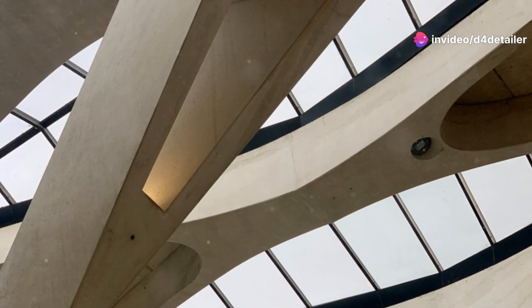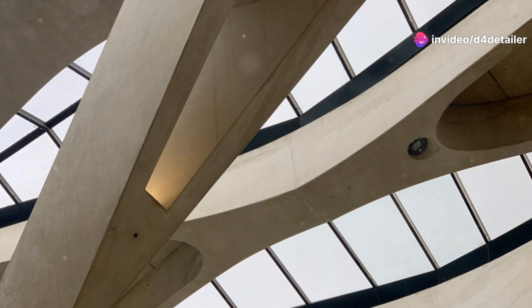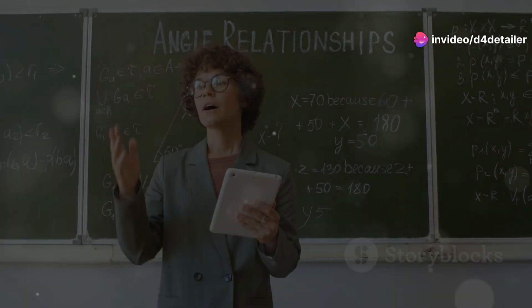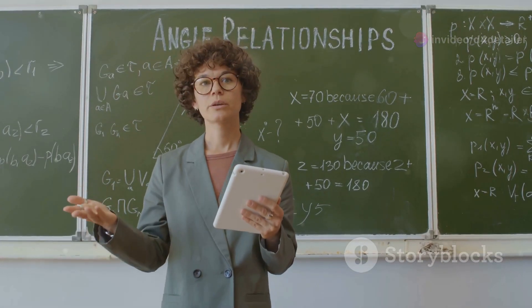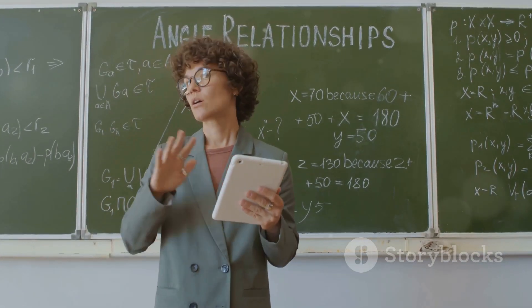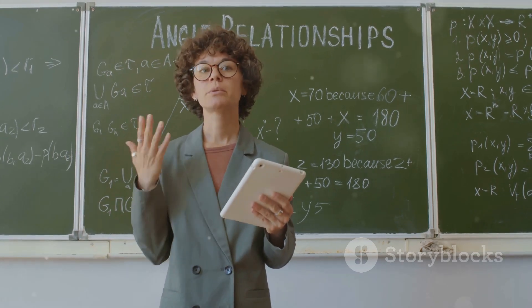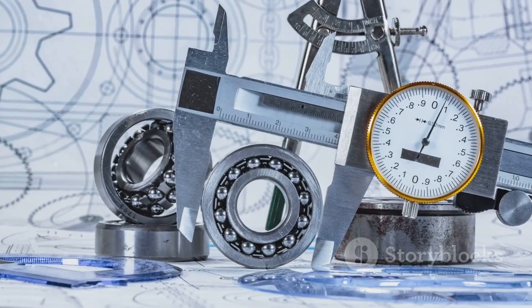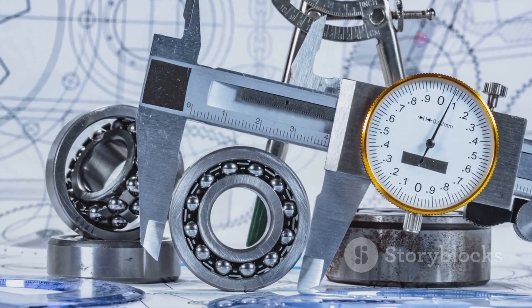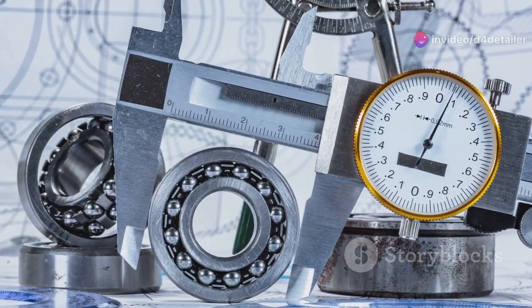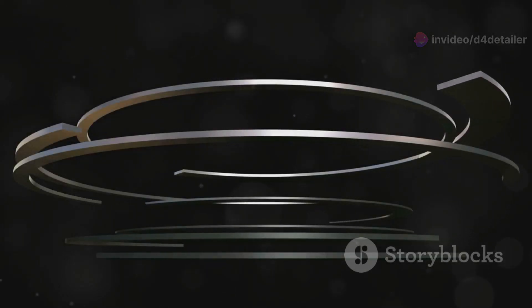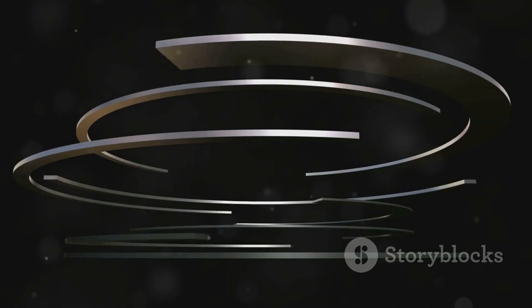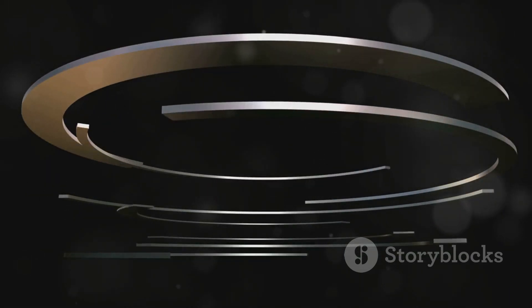Sloped beams are inclined at an angle, and the angle of inclination is crucial for their structural performance and must be accurately detailed. This angle is typically denoted using degrees and is clearly marked on the drawing. Curved beams, often used for aesthetic or functional purposes, require additional detailing. The radius of the curve is a critical dimension that dictates the beam's curvature.